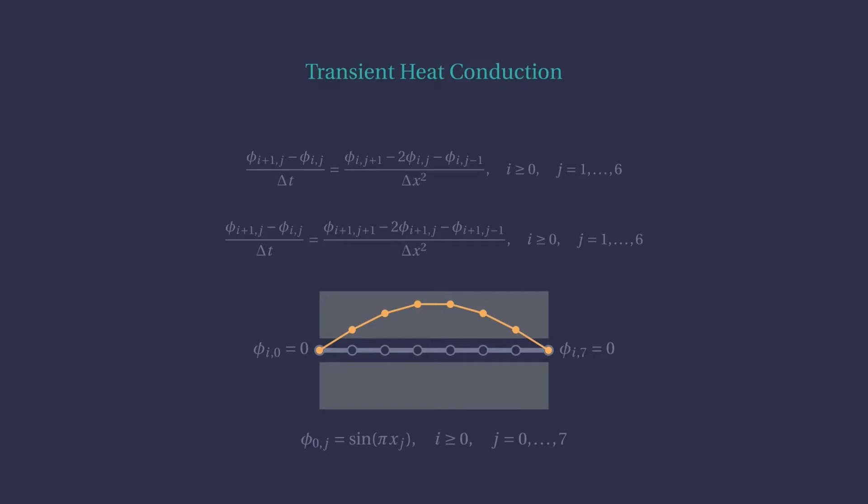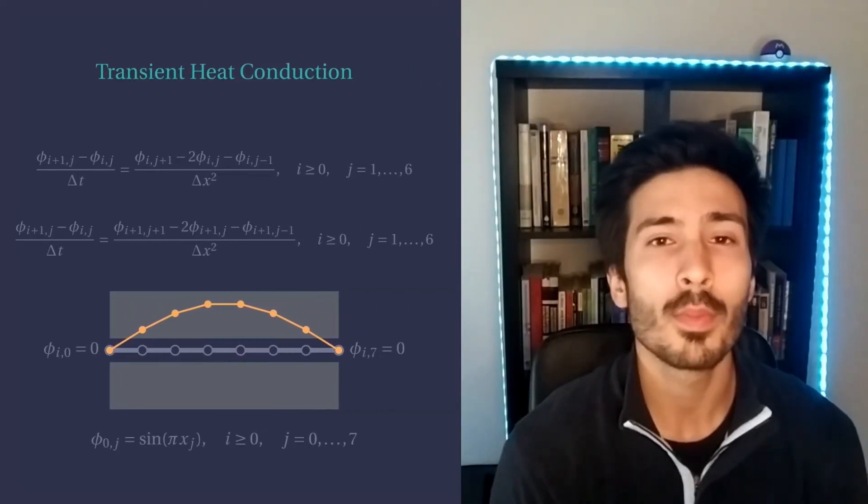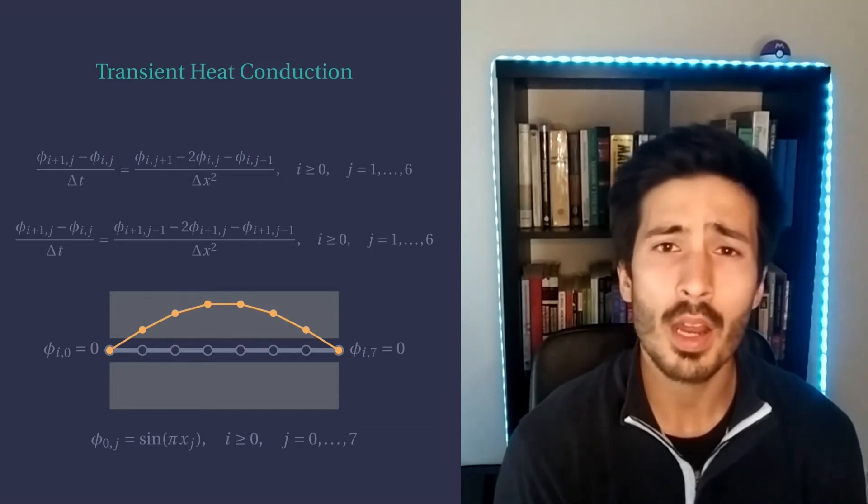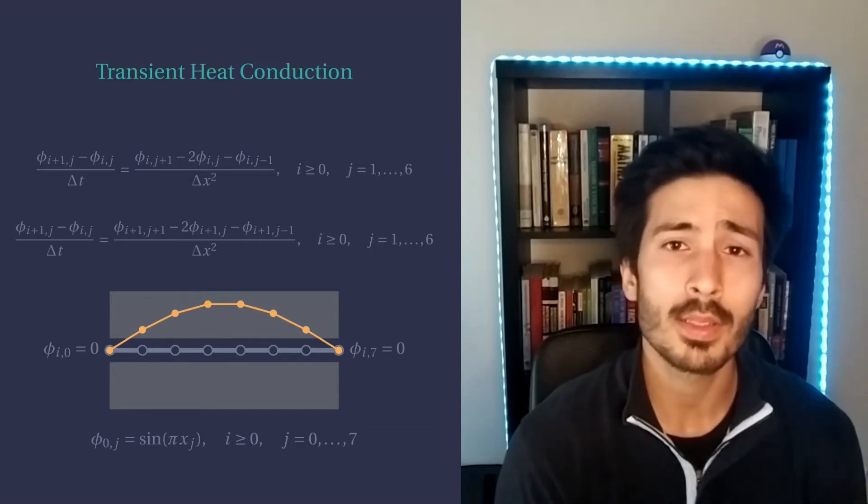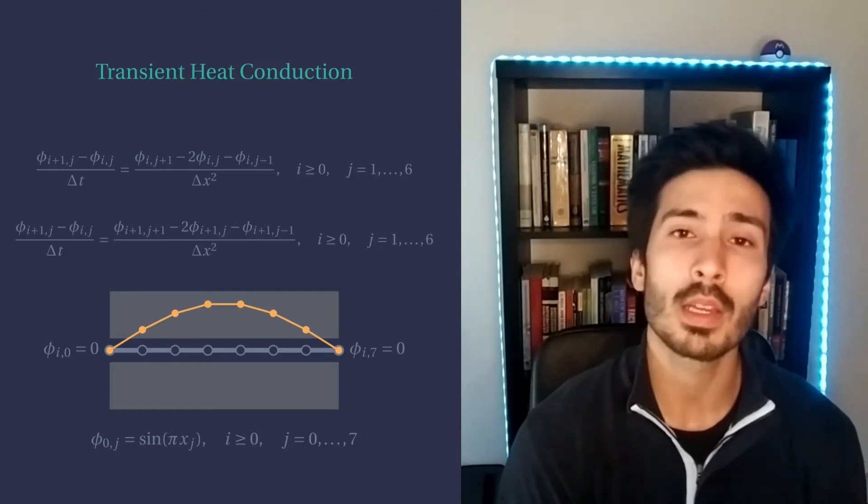To use the forward finite difference, we consider the current time instance j. On the other hand, to apply the backward finite difference formula, we consider the next time instance j plus 1. Can you spot any difference between the two? Well, looking at the accuracy, it doesn't look like it. They are both delta t plus delta x squared accurate.